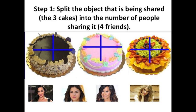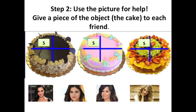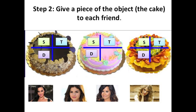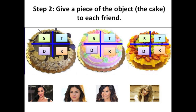Step one is to split the object that is being shared — in this case the three cakes — and we're going to split it by the number of people who are sharing it, the four friends. I drew blue lines on each cake to show how to split it into four parts for the four friends. Step two is to give a piece of the cakes to each friend. I'm marking an S on each piece for Selena, a T for Taylor, a D for Demi, and a K for Katie. Notice that everybody has an equal share of all three cakes — I've divided the three cakes by the four friends.